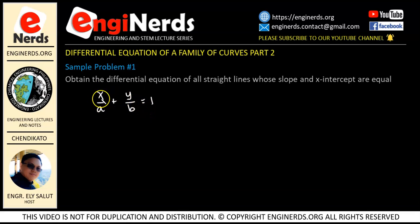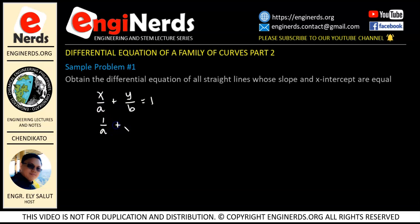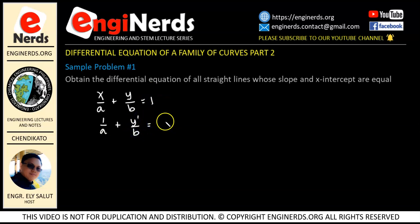The derivative of x over a is equal to 1 over a, because the derivative of x is equal to 1. Plus the derivative of y over b, which is y prime over b. And this equals the derivative of 1, which is a constant, so therefore this is equal to 0.